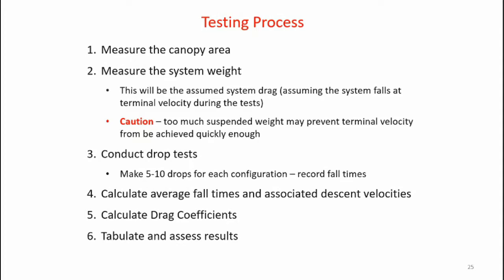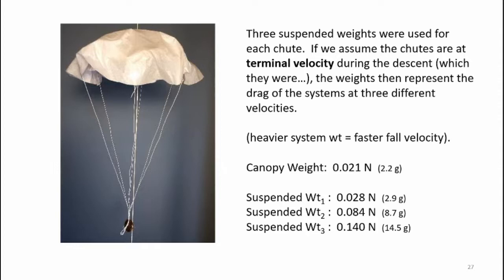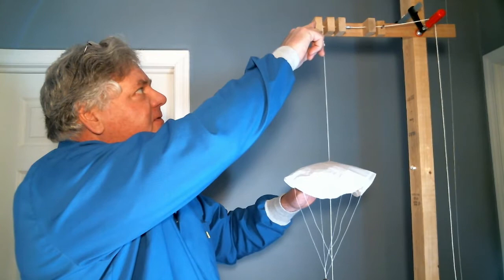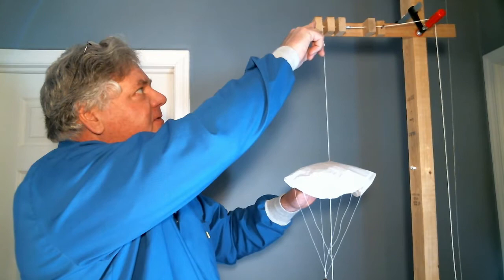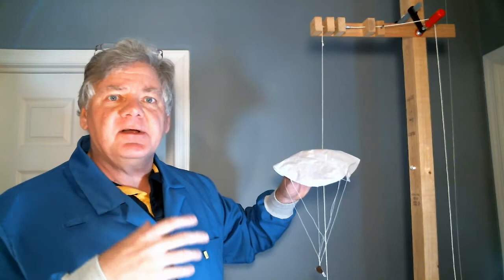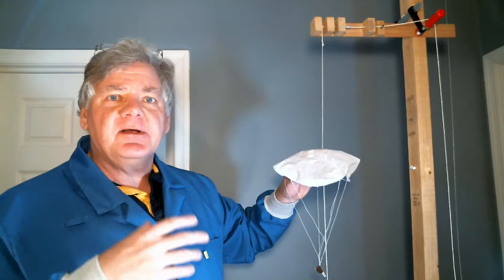Here are the three canopies that were tested — all made out of lightweight tissue paper with the same reference area of 0.05 meters squared. Three suspended weights were used for each parachute test. If we assume the chutes are at terminal velocity during descent, the weights represent the drag of the systems at three different velocities — heavier weight equals faster fall velocity. The canopy weight for each parachute was 0.21 newtons. Here's the simple drop test apparatus: a wooden rig supporting a string with a block of wood at the bottom to keep it taut. The parachute canopies have a hole punch at the apex, allowing the parachute to move down the guideline with very little friction, and a motion sensor measures the velocity.